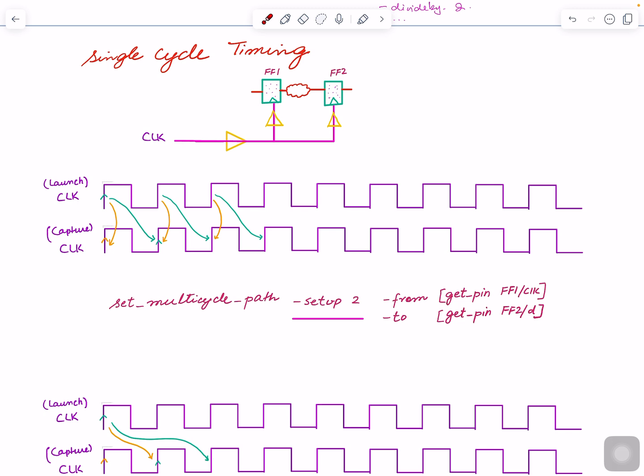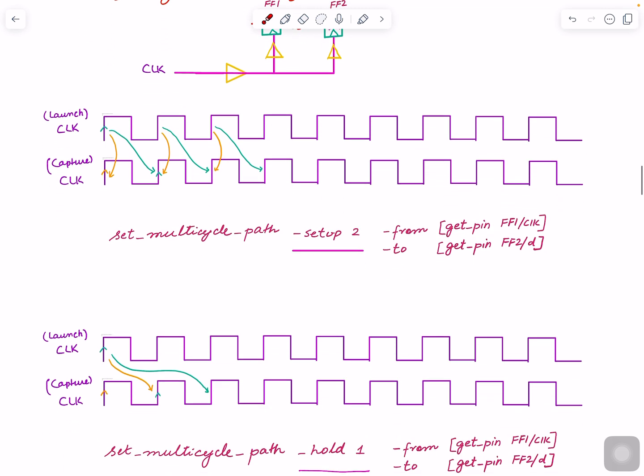And this type of constraint is now an exception, exception because this is not a normal thing, right? Normally you have single cycle. Now we are saying this can be launched here and captured here. This one. This will be launched here and captured here.